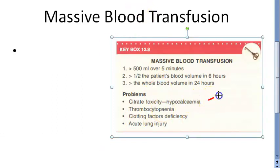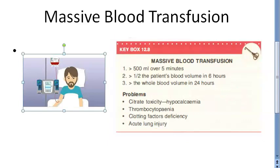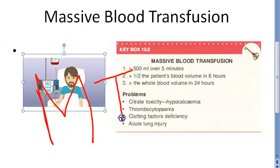The problems of massive blood transfusion include citrate toxicity and hypocalcemia - the calcium levels can become very low because of the citrate which is a preservative in the blood. Thrombocytopenia - platelets become less. Clotting factors can become less, and there can be acute lung injury. In patients with massive bleeding, you should intimate the blood bank immediately.